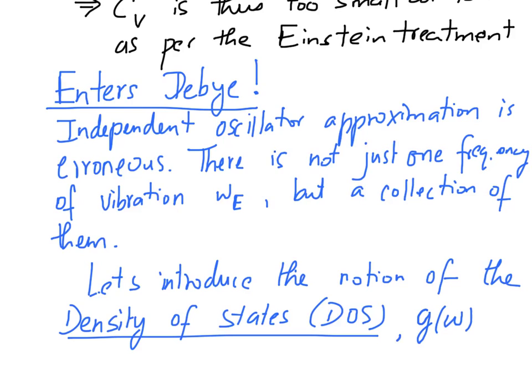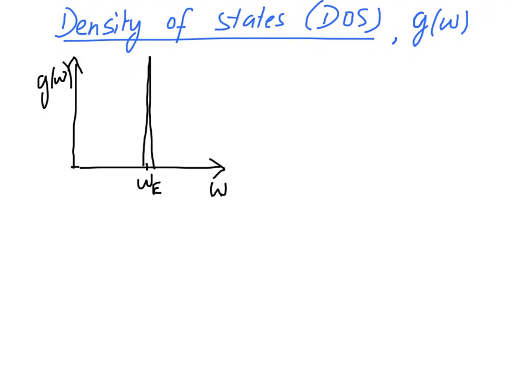G(ω) is what we call the density of states and it is simply a measure of the number of states or modes at a certain frequency ω. Within the Einstein treatment, all the modes or all patterns of vibration are assumed to have the same frequency ωE. So the density of states plot for the Einstein approximation looks like a Dirac delta function at the frequency ωE, with G(ω) along the y-axis and frequency along the x-axis.